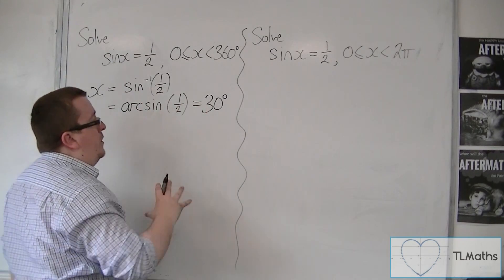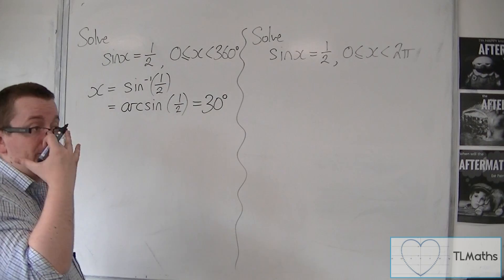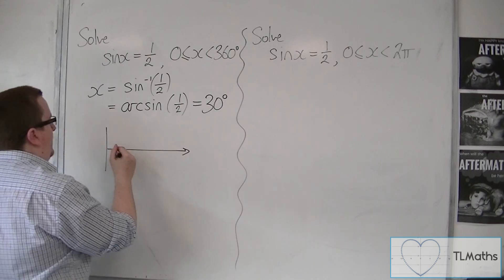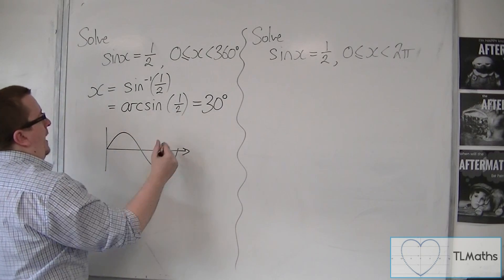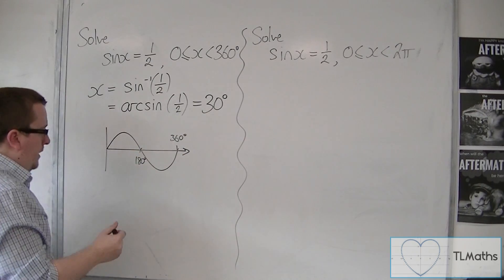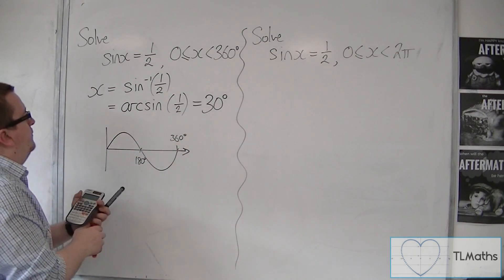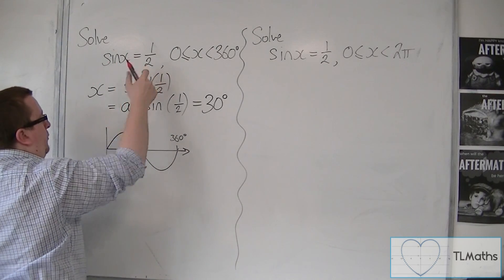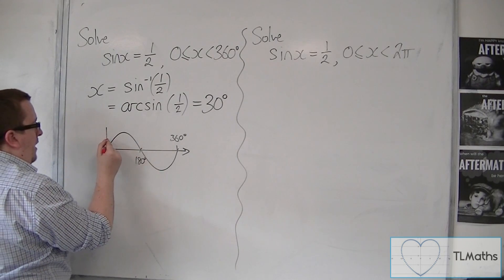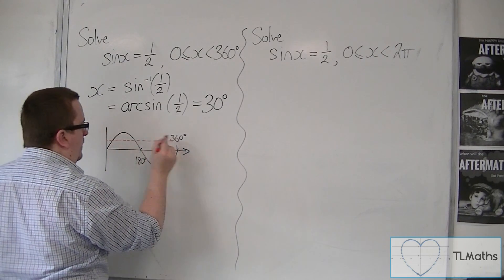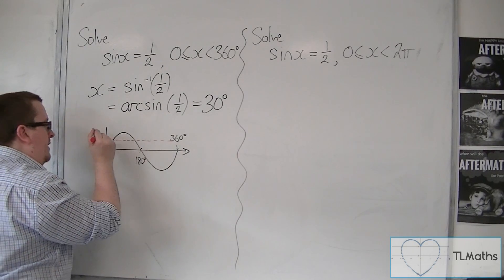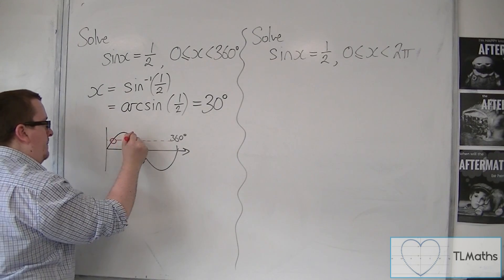Now, that's not the end of this problem. We then sketch sine x — y equals sine x — going between 0 and 360 degrees, with 180 marked. We're going to look at y equals one half. We know that the curve goes between minus one and one, so a half would be about there. We put in a dotted line, and we can see that the half line crosses the curve at two points.